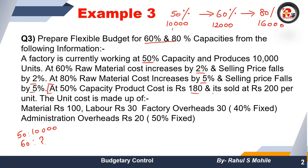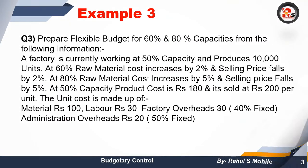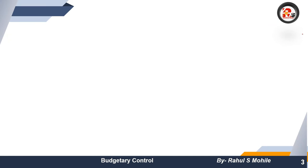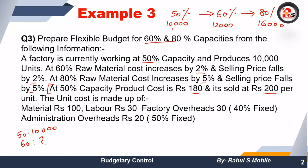At 50% capacity, product cost is 180 rupees per unit and selling price is 200 rupees per unit. First we will make the format — working notes for flexible budget at 50%, 60%, and 80% capacity. We start by writing material at 100 rupees and labor at 30 rupees.